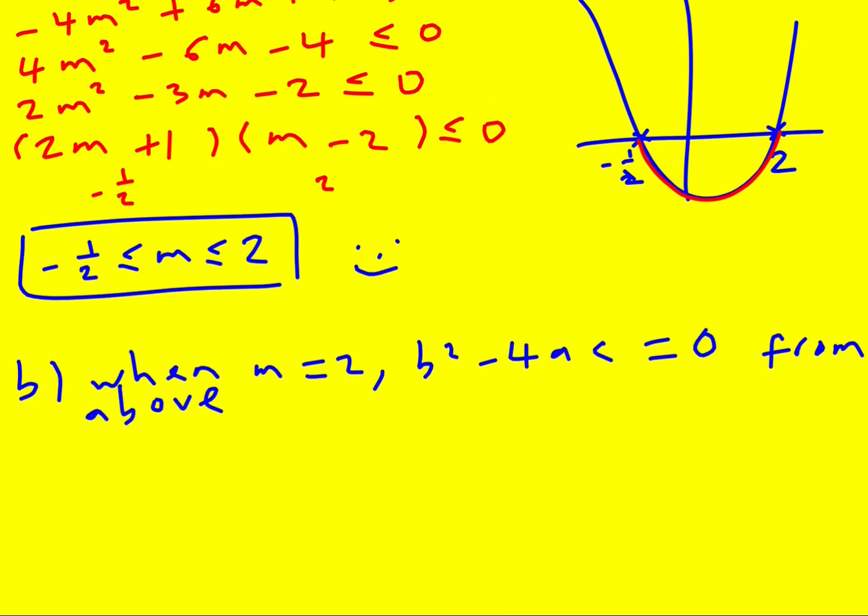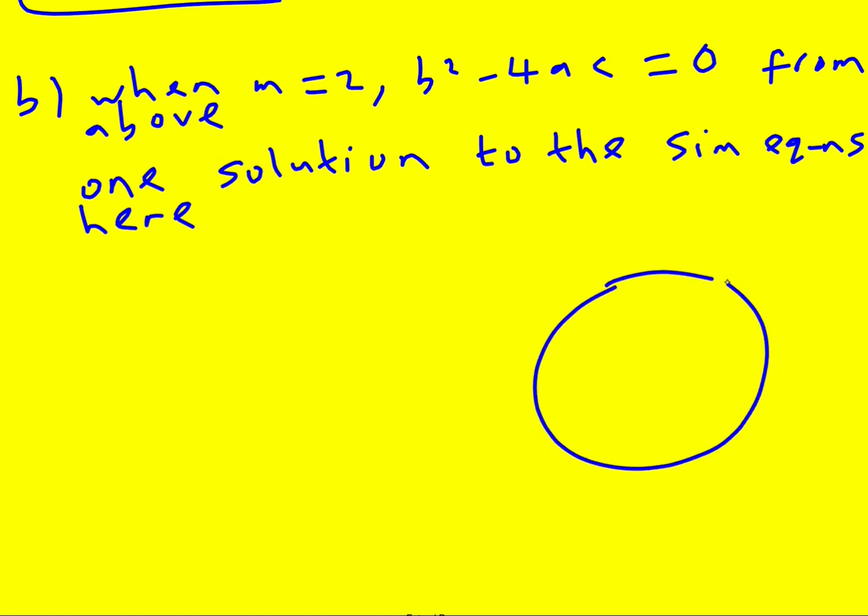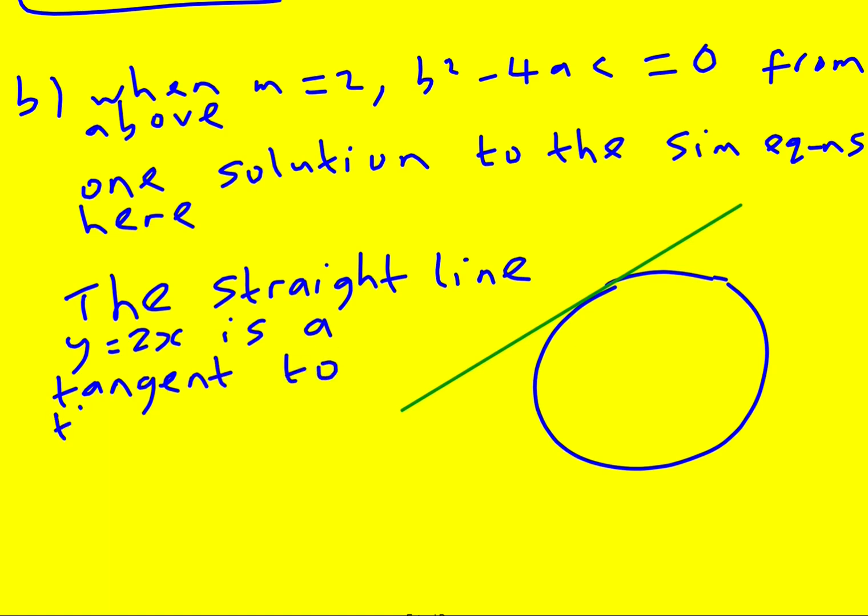So from above, and there'll just be one, I mean you wouldn't call it repeated roots maybe, but there's one solution to the simultaneous equation here. If I come back to this, it is a circle, and if there's just one solution the straight line is just going to glance off of it like that. So the straight line will be a tangent to the other curve.